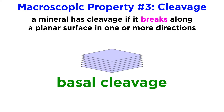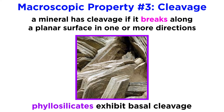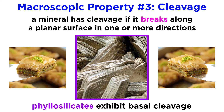A mineral that has one direction of cleavage, like graphite, is said to have basal cleavage. A class of minerals called phyllosilicates, or sheet silicates, are easily identified based on their perfect basal cleavage, causing them to break apart like the crust of baklava.